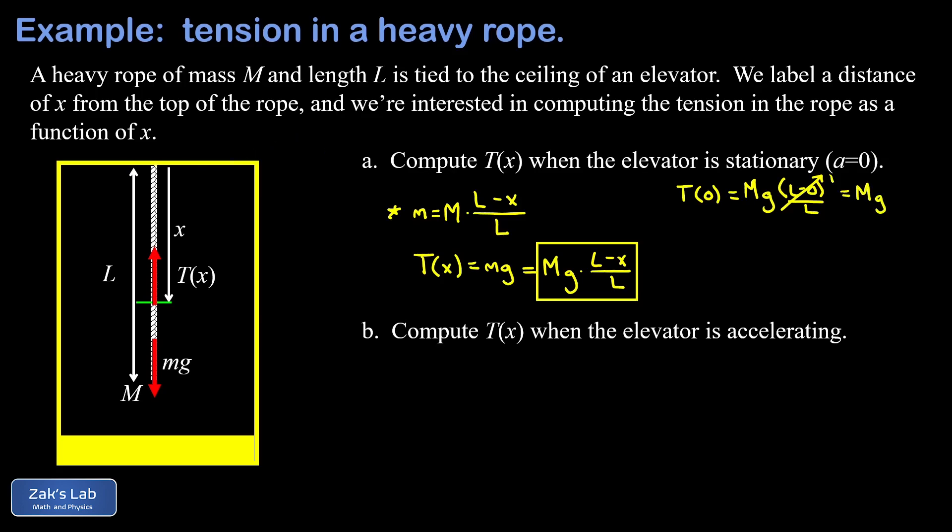And when we look at what this means in the diagram, if x is zero, it means we're at the very top of the rope. And so the tension there is responsible for holding up the entire mass of the rope, which has a weight of big mg. So this answer makes sense.